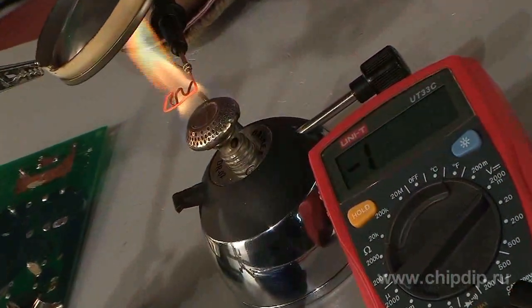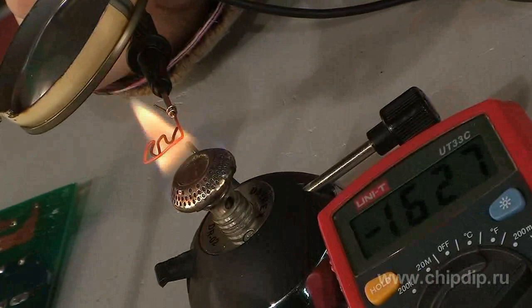Then we heat the cathode with a burner until the wire becomes red-hot and incandescent.